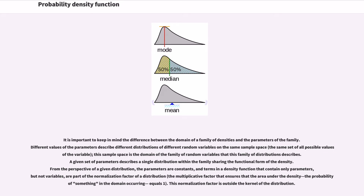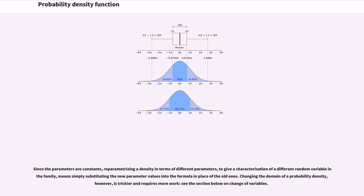From the perspective of a given distribution, the parameters are constants, and terms in a density function that contain only parameters but not variables are part of the normalization factor of a distribution. This normalization factor is outside the kernel of the distribution. Since the parameters are constants, reparameterizing a density in terms of different parameters — to give a characterization of a different random variable in the family — means simply substituting the new parameter values into the formula in place of the old ones. Changing the domain of a probability density, however, is trickier and requires more work.